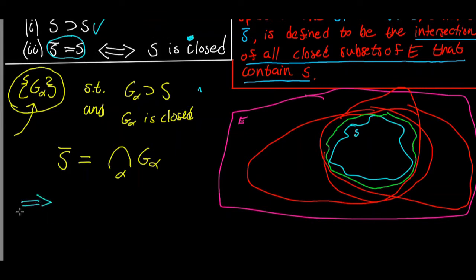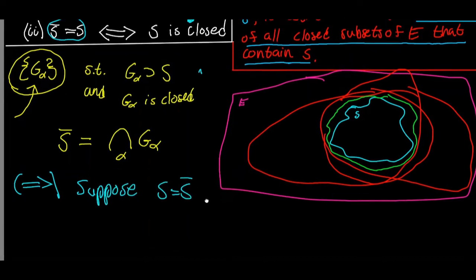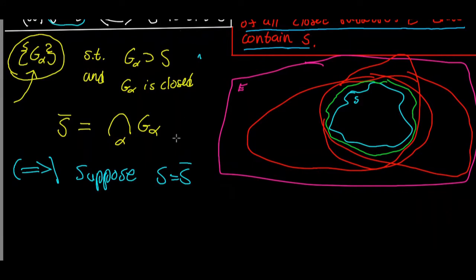Let's go this direction first. We're going to suppose S is equal to the closure of S. Now remember what we know about the closure of S: it is the intersection of all sets G_alpha such that G_alpha contains S and G_alpha is closed. Every possible closed set containing S — the closure of S is the intersection of all of those sets.